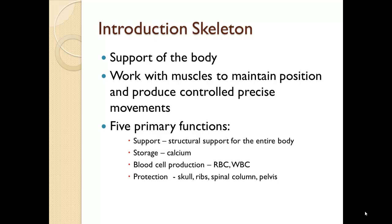The five functions: it provides structural support for the entire body. It provides storage — primarily calcium storage. It produces our red blood cells, white blood cells, and other blood components from the bone marrow. It protects sensitive areas: the brain, heart, lungs, spinal column, and pelvis area — including the pelvic girdle, vertebrae, ribs, and skull.